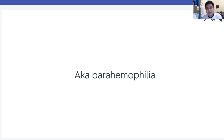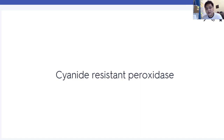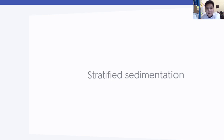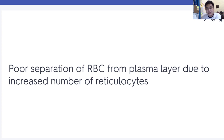Owren's disease is also known as parahemophilia — Factor 5 is deficient in Owren's disease. Cyanide-resistant peroxidase stains the eosinophilic component in eosinophilic leukemia. Stratified sedimentation is poor separation of RBCs from the plasma layer due to an increased number of reticulocytes.